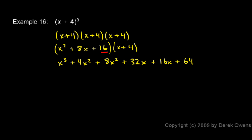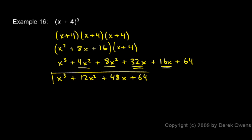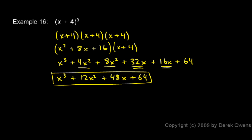Then I combine like terms. The x cubed is the only x cubed term, but I have a 4x squared and an 8x squared — those combine to give me 12x squared. And I have a 32x and a 16x — those combine to give me 48x. And then I have the 64 on the end. So the answer is x cubed plus 12x squared plus 48x plus 64.